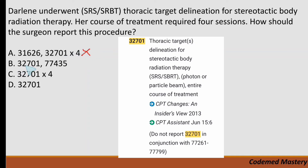Option B includes 32701, which is the correct code for thoracic target delineation for stereotactic body radiation therapy — covering the entire course of treatment. However, option B also includes 77435 — stereotactic body radiation therapy treatment management per treatment course. Under code 32701, the instruction states: do not report 32701 in conjunction with codes 77261 to 77999. Since 77435 falls within that range, we cannot report them together, so we eliminate option B.